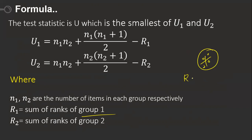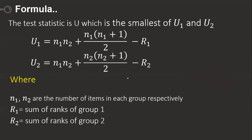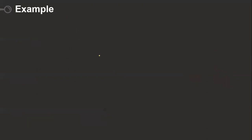One very important point: when we assign ranks, we must treat both groups as a single combined group, not two separate groups. We rank the combined data and then split the ranks back to each group. A separate video on how to calculate ranks for given data is linked in the description box.